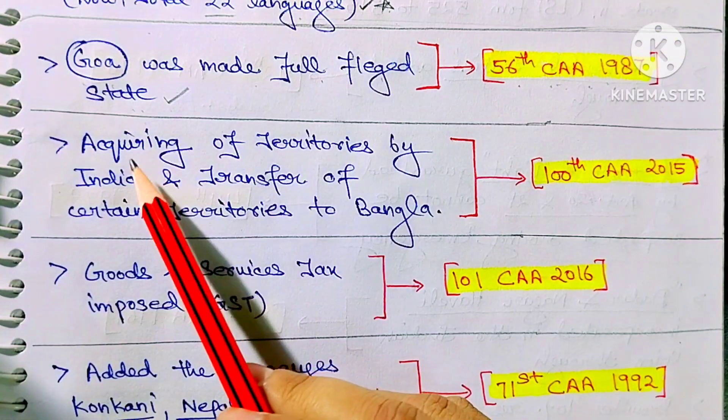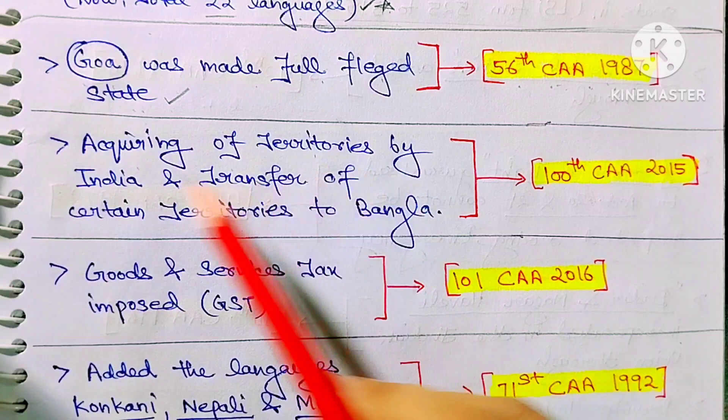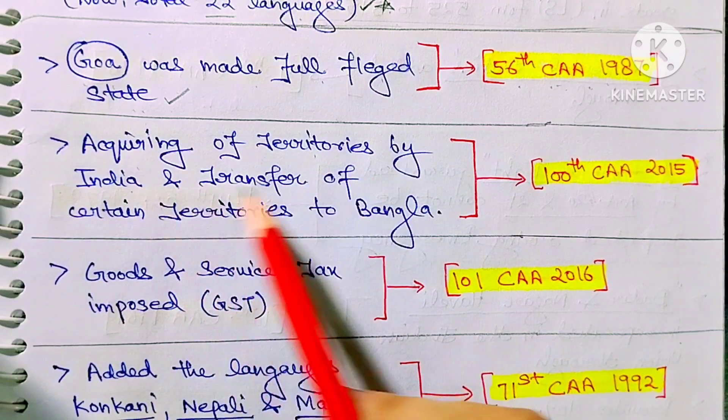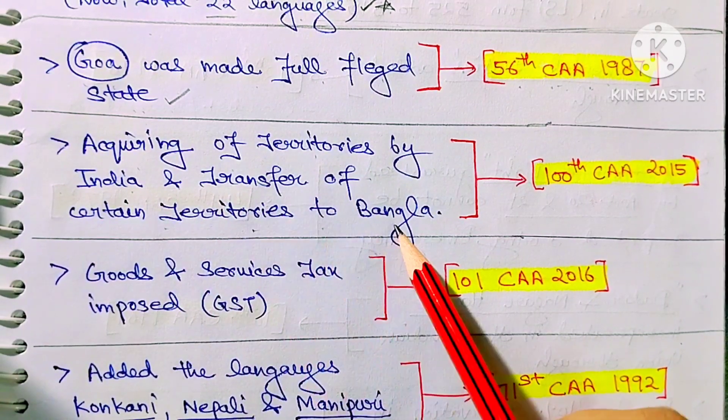Next: the acquiring of territories by India and the transfer of certain territories to Bangladesh.